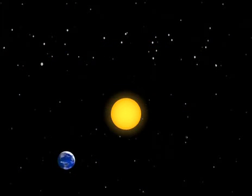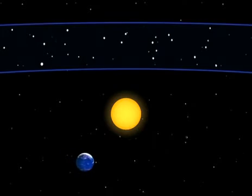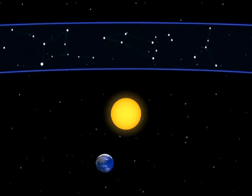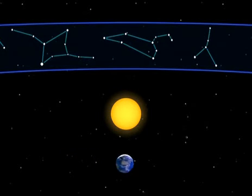As the Earth travels on its orbit, the Sun also appears in successive sectors of the zodiac. At the moment, it's in front of the constellation Leo, the Sun in Leo at the end of August. According to the horoscope, it should be in Virgo.